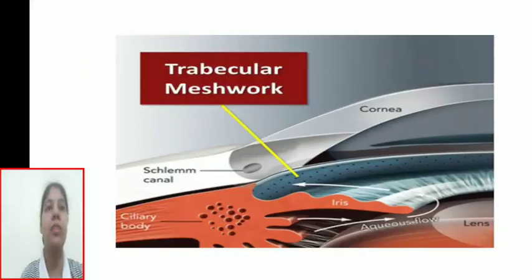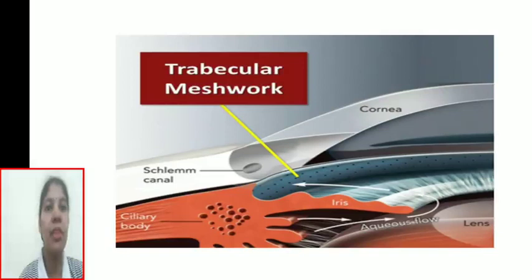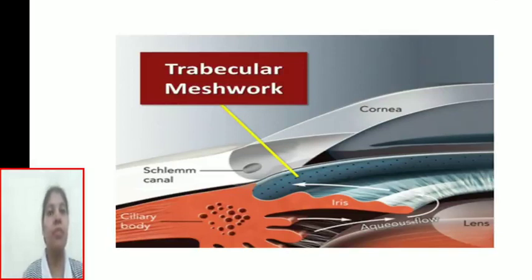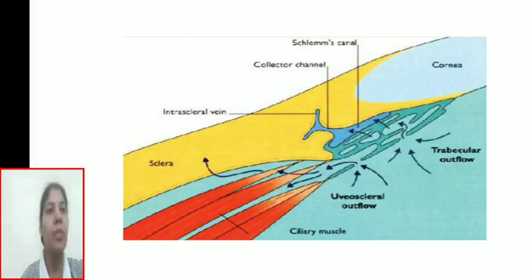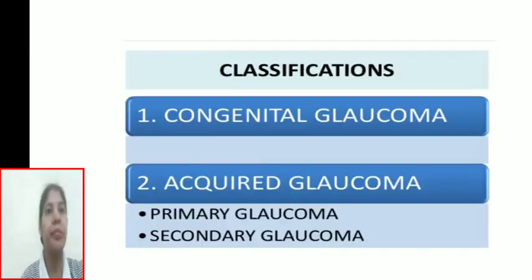This diagram shows the cornea, Schlemm's canal, iris, aqueous humor flow, ciliary body, and the trabecular meshwork. The trabecular meshwork is a very important structure in glaucoma. The process also involves collector channels for the movement of fluid.